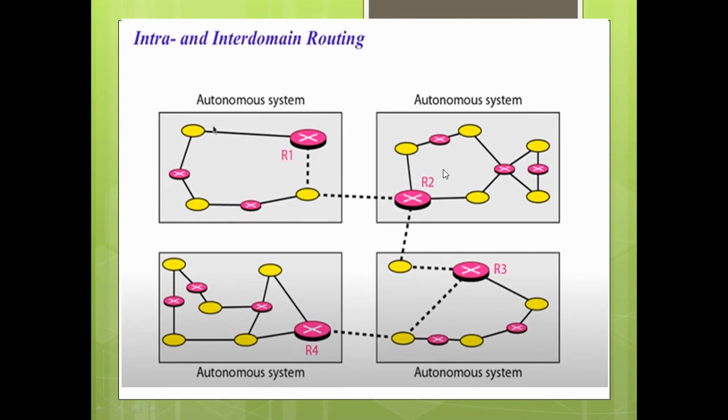So what do we mean by inter-domain and intra-domain routing protocol? When the routing is taken care of inside an autonomous system, it is intra-domain routing. And when the routing is between two different autonomous systems, then it is inter-domain routing.